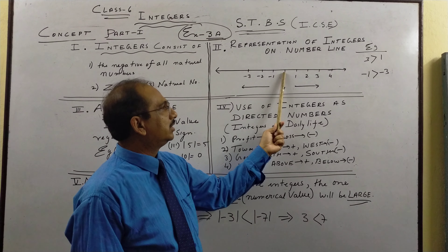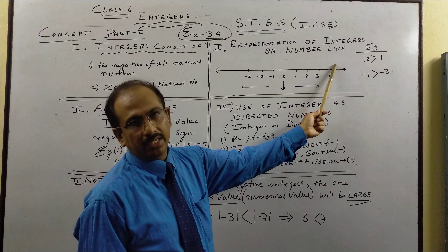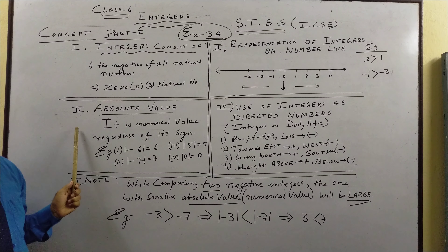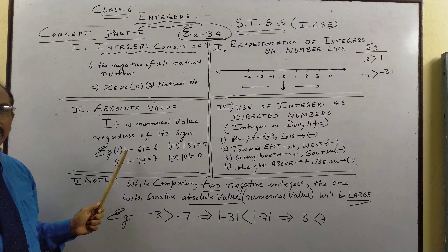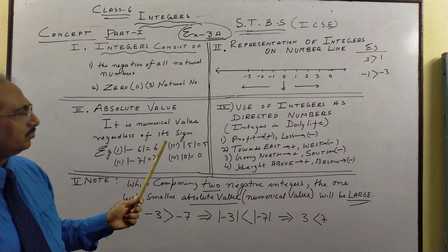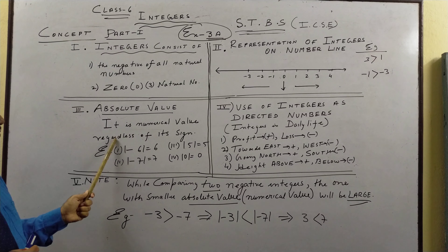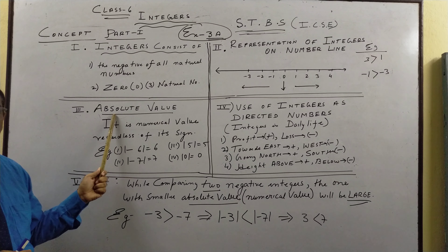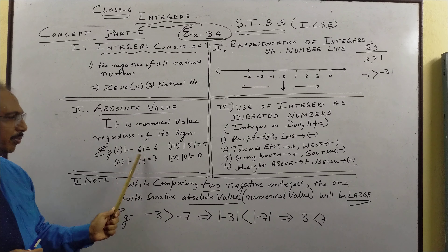An integer consists of the negative of all natural numbers — so natural numbers are 1, 2, 3, 4 and their negatives are minus 1, minus 2, minus 3, and so on. Integers also include 0 and all the counting or natural numbers. So integers consist of 3 things. This is how we represent them on a number line: we start with 0, the left side goes towards minus infinity, and the right side goes towards positive infinity.